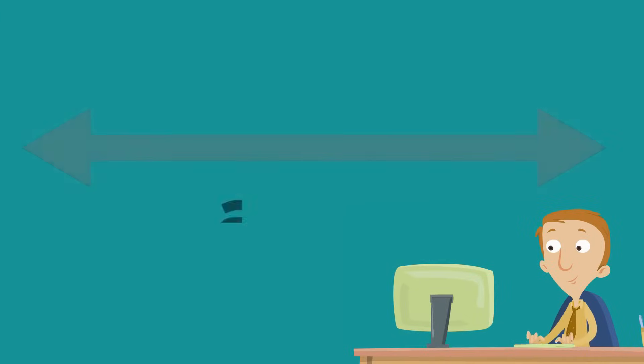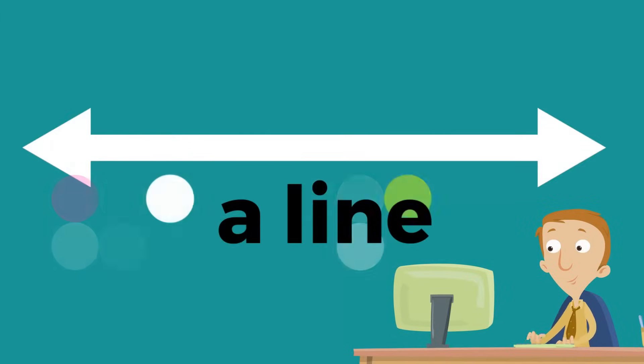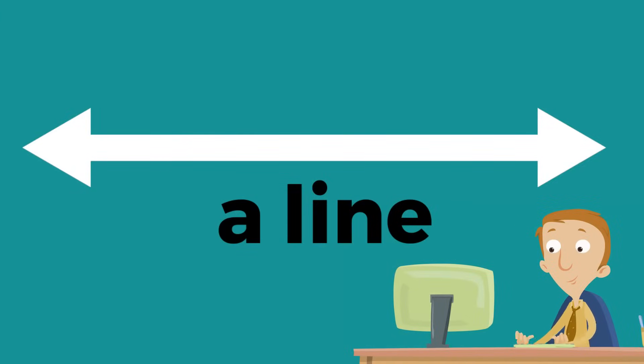Here's a line. We know it's a line because it has these two arrows. The arrows show the line keeps going and going in both directions.